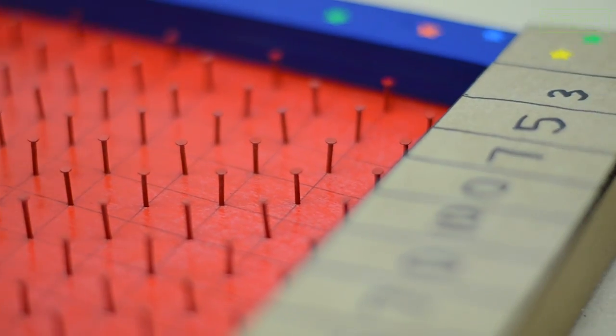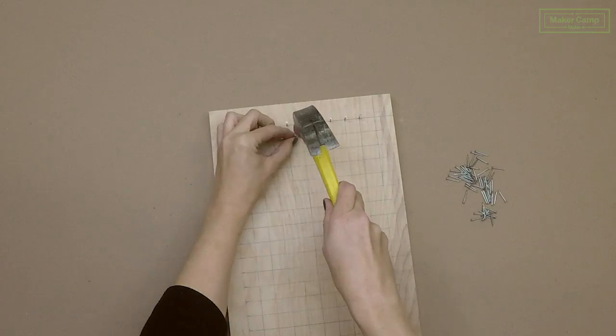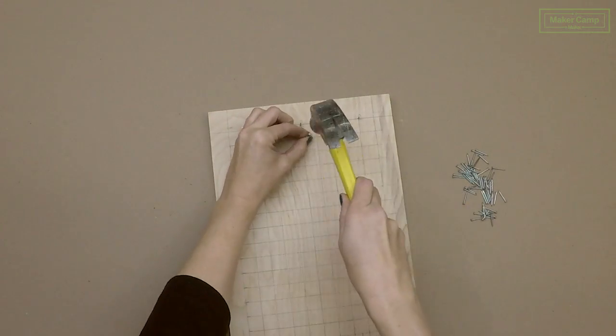Hi campers! Today we're building the classic carnival game, a marble drop. We'll start with a rectangular piece of wood and we'll add an array of evenly spaced nails and scoring buckets to the bottom.